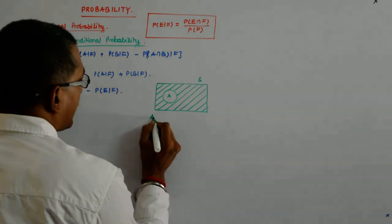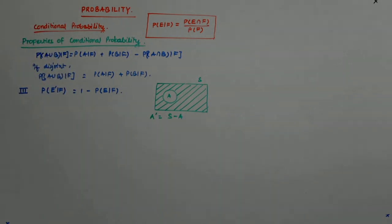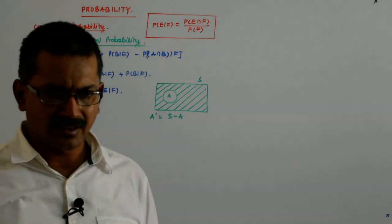And it is denoted by A complement and that is actually S minus A. That is the difference of S and A.